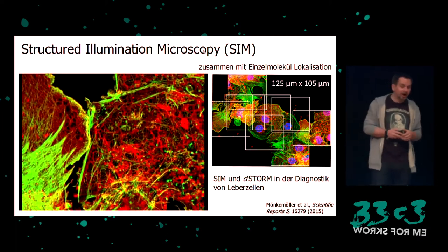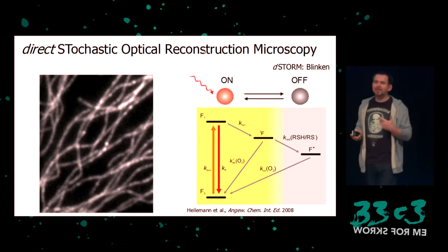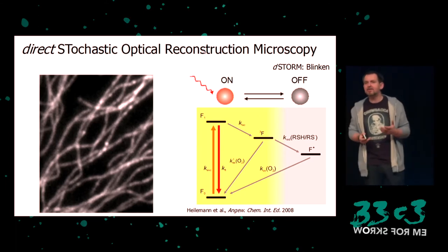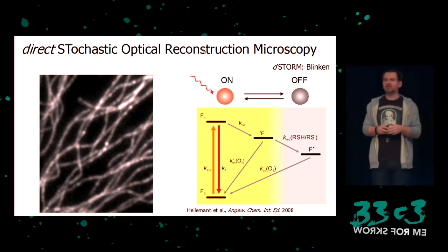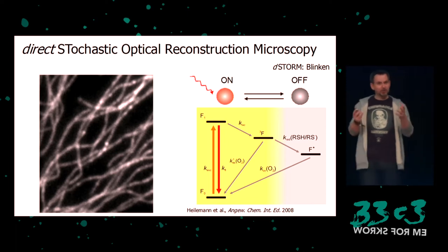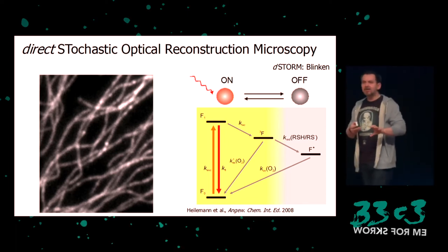Now we go to localization microscopy — that was my PhD thesis. The technology is called Direct Stochastic Optical Reconstruction, or D-STORM for short. And this is about blinking. We put chemicals and dyes on the sample with chemistry, and the dyes are made to switch off — only one out of 2,000 is working at any time, and the others are off. And if you look at that in a microscope, here's what it looks like.